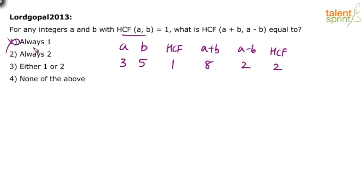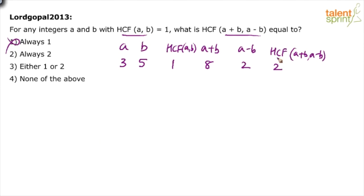So option 1 gets eliminated, because option 1 says the HCF of (a+b) and (a-b) is always 1. But it is not always 1 — in the very first case itself we got 2.